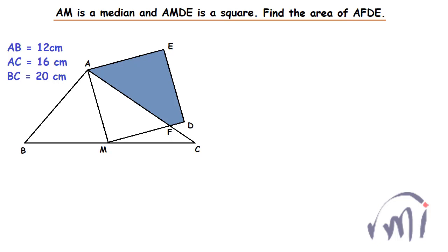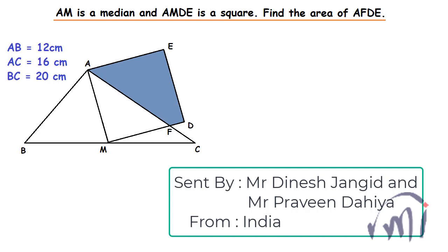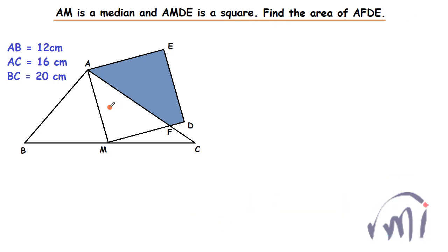Hi, so here we have a problem which was sent by Mr. Dinesh Jangit and Mr. Praveen Dahiya from India. In this problem we have a triangle ABC where AB is equal to 12 cm, AC is equal to 16 cm and BC is equal to 20 cm. AM is the median of this triangle, and there is a square AMDE whose each side is equal to the length of median AM. The side MD of the square intersects side AC of the triangle at point F, giving us quadrilateral AFDE, and we have to find the area of this quadrilateral AFDE.